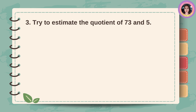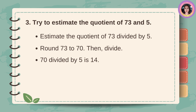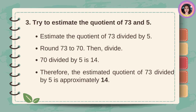Try to estimate the quotient of 73 and 5. Estimate the quotient of 73 divided by 5. Round 73 to 70, then divide. 70 divided by 5 is 14. Therefore, the estimated quotient of 73 divided by 5 is approximately 14.